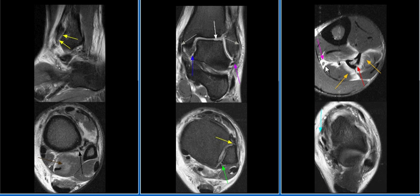The posterior tibial nerve shows mild edema. The anterior talofibular ligament is sprained and partially stripped from its talar attachment site, as seen with this purple arrow.